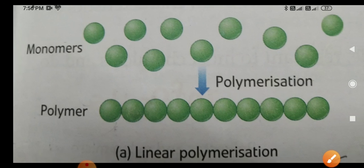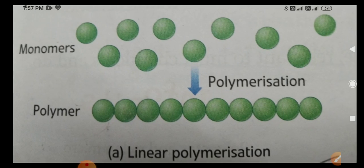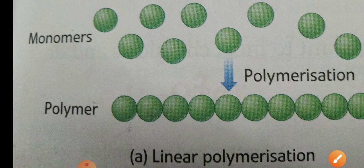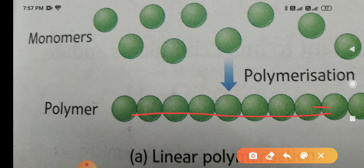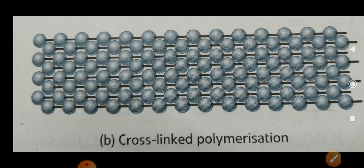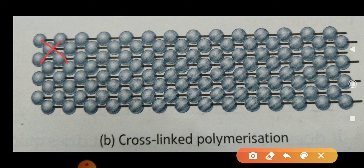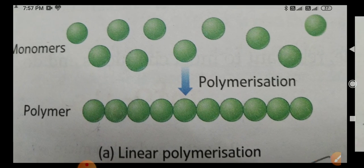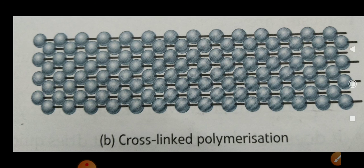Polymerization is of two types: the first is called linear polymerization and the second is called cross-linked polymerization. In linear polymerization, the monomers are arranged in a single line, as you can see in the picture. In cross-linked polymerization, the monomers are in a crisscross arrangement, as shown. That is enough for today, thank you.